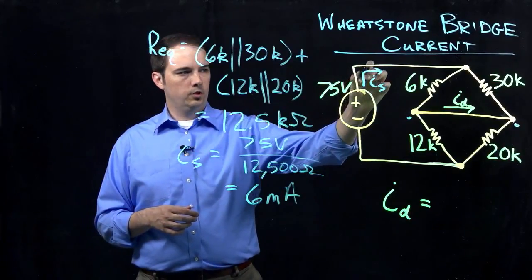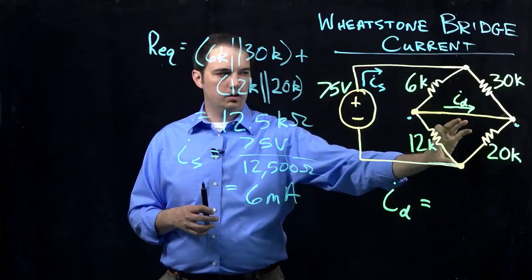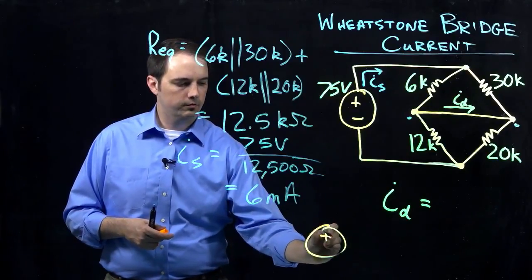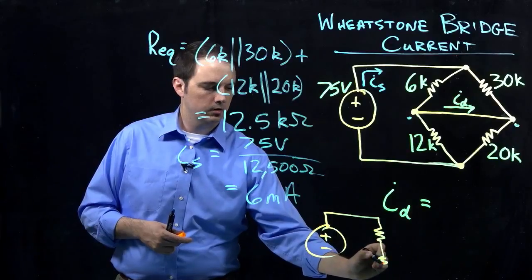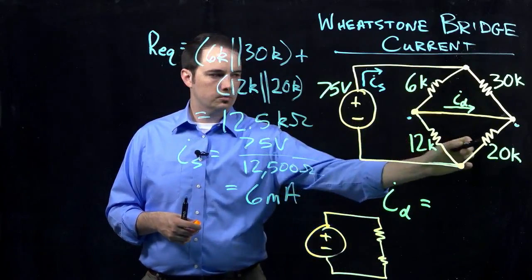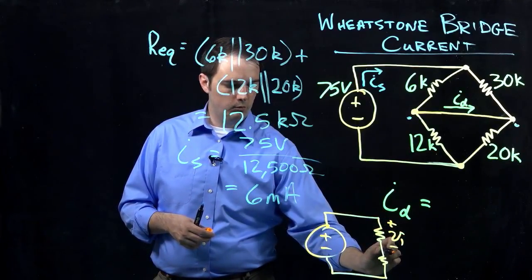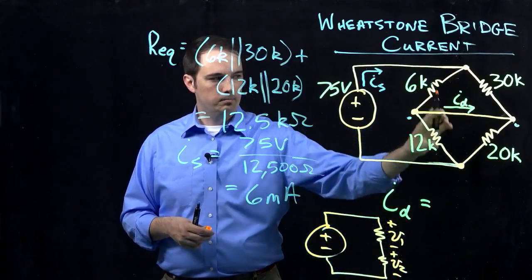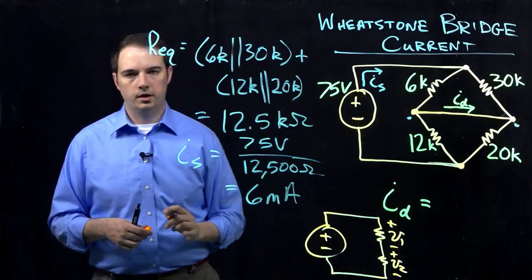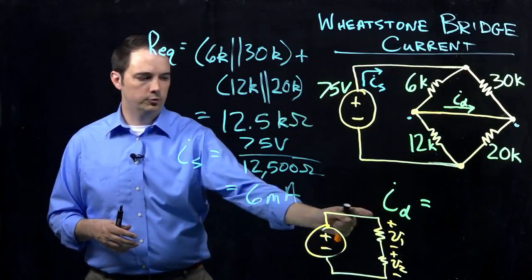Now that we have the total current flow, we can establish the voltage drop across the two halves of the circuit. We can redraw this as two resistors: the top resistor is the parallel combination of the 6k and 30k, and the bottom is the parallel combination of the 12k and 20k. We want to find V1 and V2 — the voltages across the top and bottom halves — which will allow us to find the current through the 12kΩ resistor and ultimately solve for current ID using KCL.